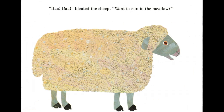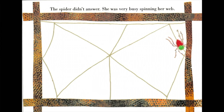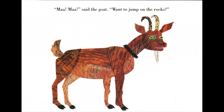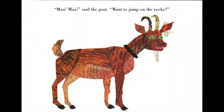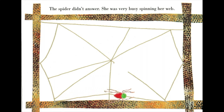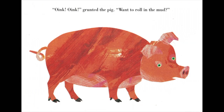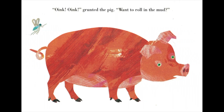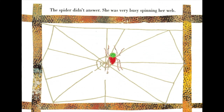The sheep called out, wanting to run in the meadow. The spider didn't answer. She was very busy spinning her web. The goat said, want to jump on the rocks? The spider didn't answer. She was very busy spinning her web. Oink! Oink! grunted the pig. Want to roll in the mud? The spider didn't answer. She was very busy spinning her web.